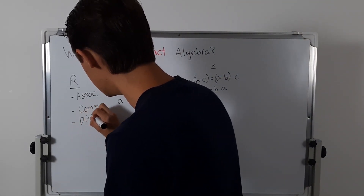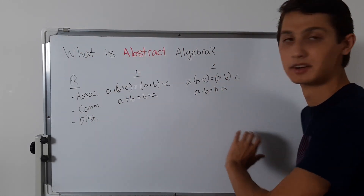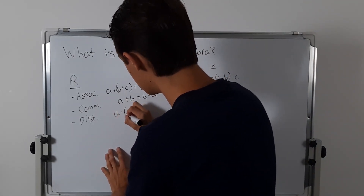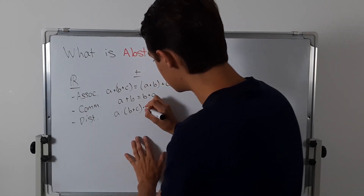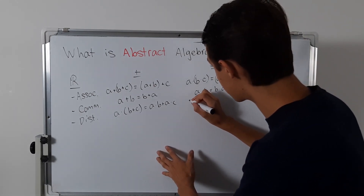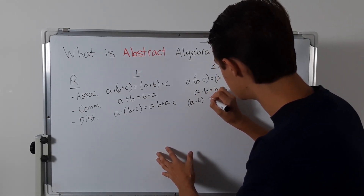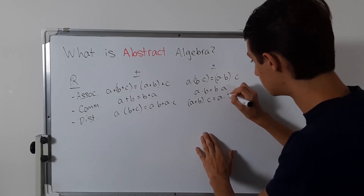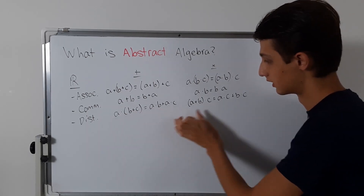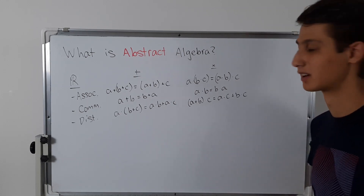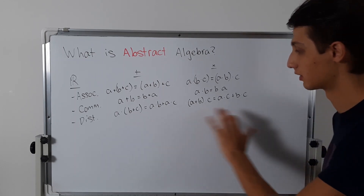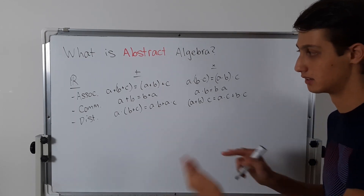We also have the distributive property, which doesn't neatly fit into just addition or multiplication. There's the left distributive law: a times (b + c) equals a times b plus a times c. And then there's the right: (a + b) times c equals a times c plus b times c. The difference is just which side you distribute from — this is actually a super important concept.